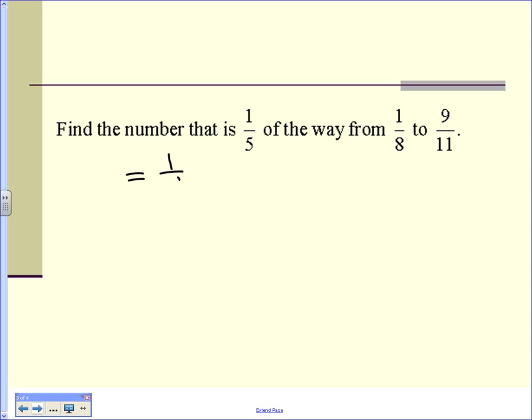What would you do for your formula? 1 eighth plus 1 fifth of what? 9 elevenths minus 1 eighth. Make sense so far?